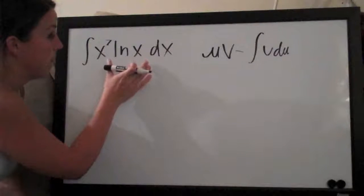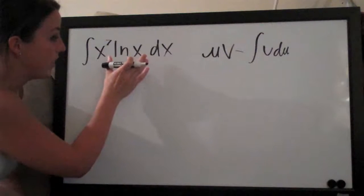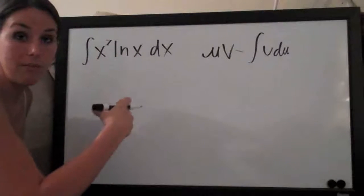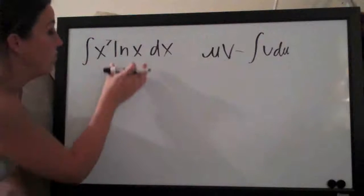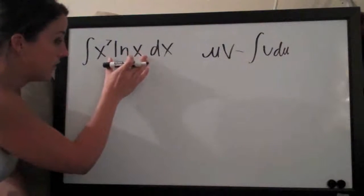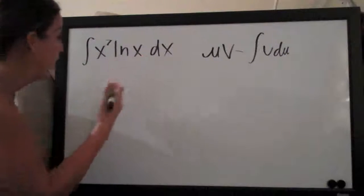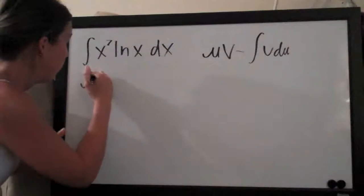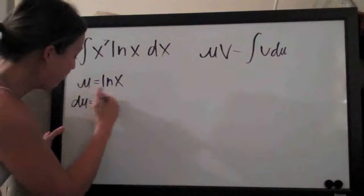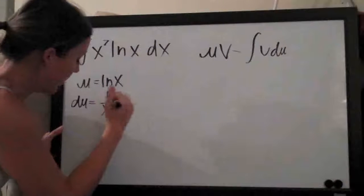Which in this case is a pretty natural giveaway because ln or the natural log of x, when we take the derivative of that we get one over x which is much simpler. So ln of x ends up being a good candidate to assign u to. We'll say that u equals natural log of x and then we'll take the derivative of that and get one over x.